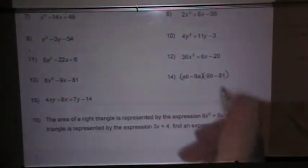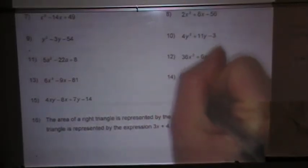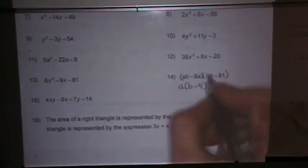First set and second set. Factor out a GCF of a, and that would leave me b minus 9.